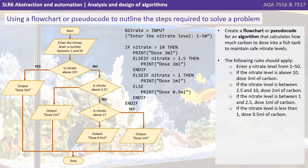You can see now how we've turned this flowchart line by line into pseudocode. Now this code won't run — it's not been written in any given language like Python, Visual Basic, or C Sharp — but it's code-like. It's using lines like nitrate equals input, and if nitrate greater-than 10.